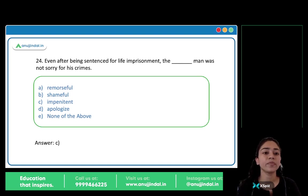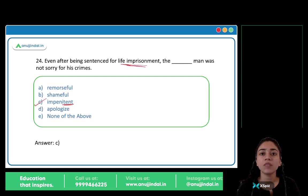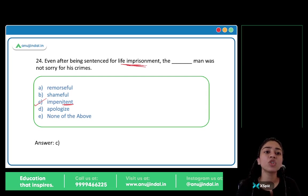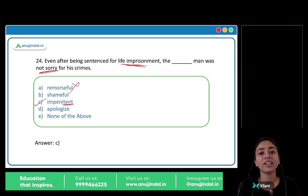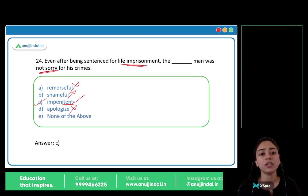Even after being sentenced to life imprisonment, the blank man was not sorry for his crimes. The answer is option C, impenitent. Impenitent means not having any regret, not having any shame. He was sentenced to life imprisonment but was still not sorry — not remorseful. Remorseful means full of regret; shameful means full of shame — those are opposites of what fits. Apologize also doesn't work. So the correct word is impenitent — having no regret, having no shame. C is your answer.